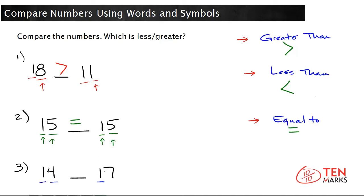Fourteen has four ones. Seventeen has seven ones. Seventeen has more ones, which means that fourteen is less than seventeen.